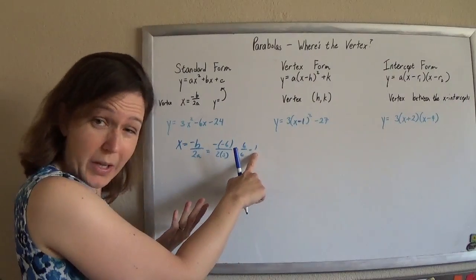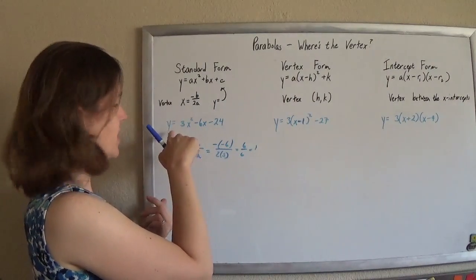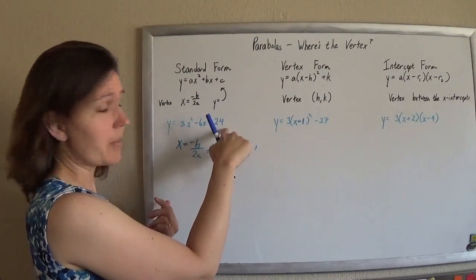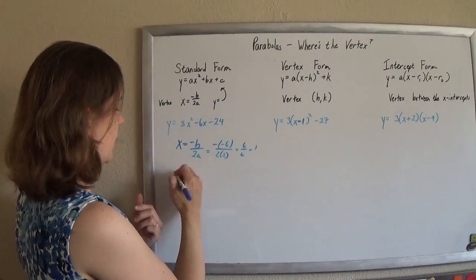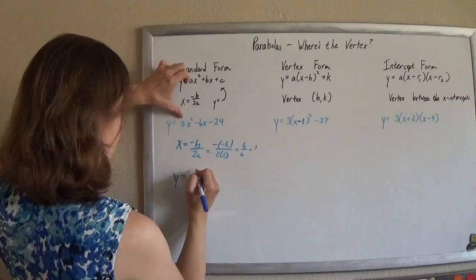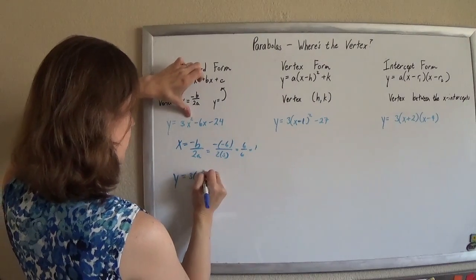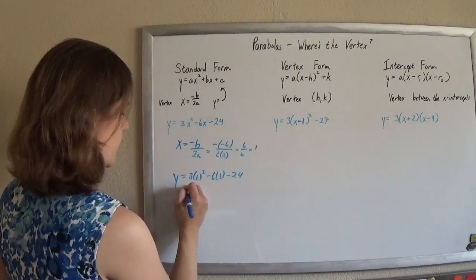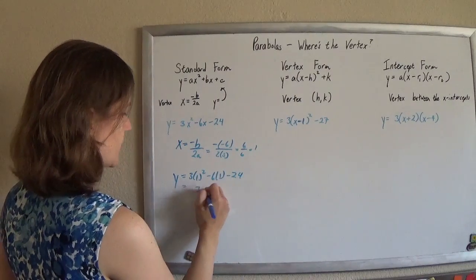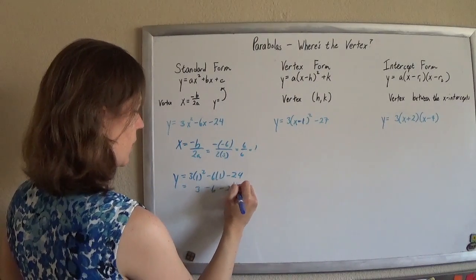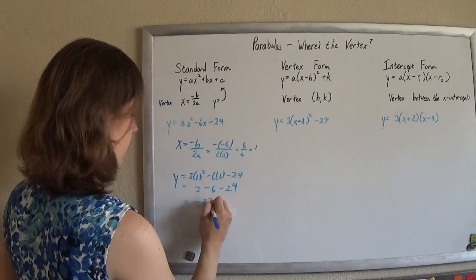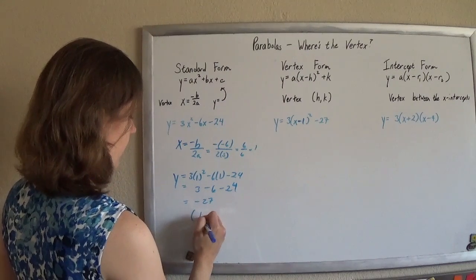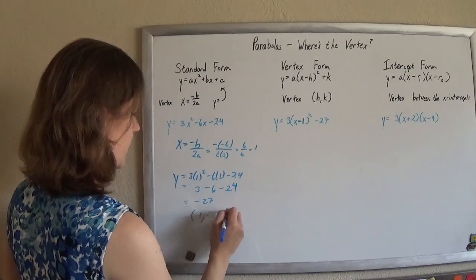How do I get the y-coordinate of the vertex? I've got a handy-dandy equation that tells me y equals this. When x is 1, y will equal 3 times 1 squared minus 6 times 1 minus 24. So 1 squared is 1 times 3 is 3 minus 6 minus 24, so negative 27.